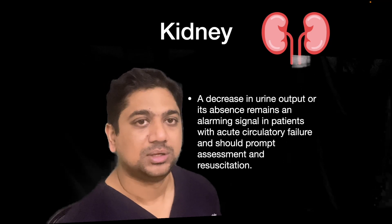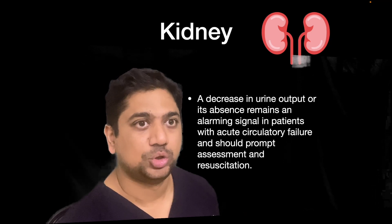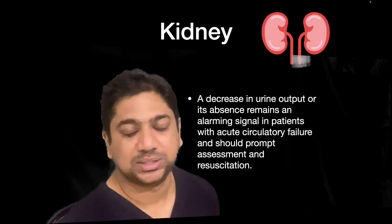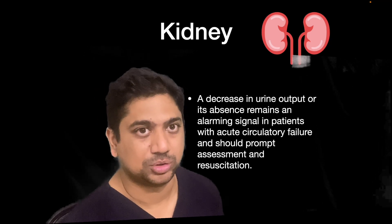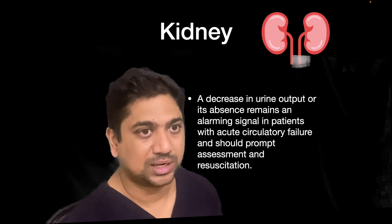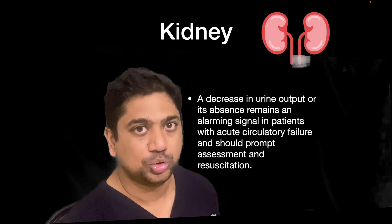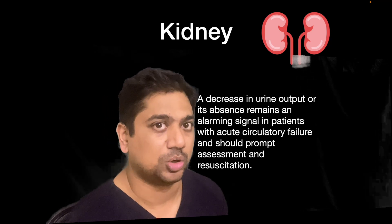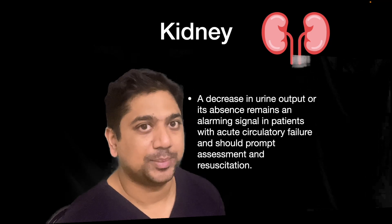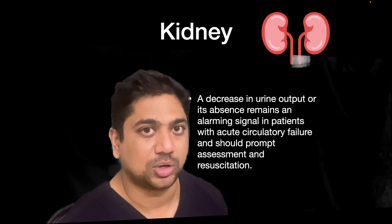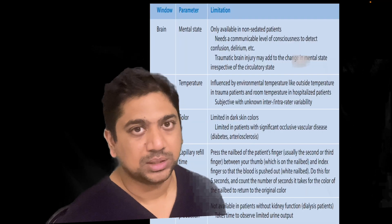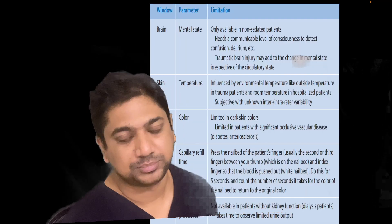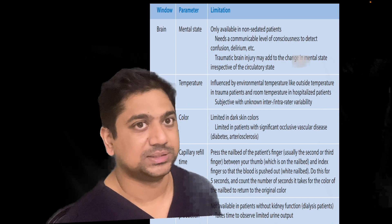A study conducted in ICU doctors found that about one in four doctors was classified as oliguric and at risk of kidney injury, yet none developed any complications later on. However, if you do find a decrease in urine output, treat it as an alarming sign. Always consider that there is a component of hemodynamic compromise, look for more supporting factors, and do not neglect a decline in urine output — always investigate its possible cause.